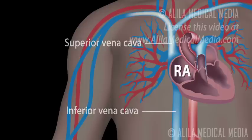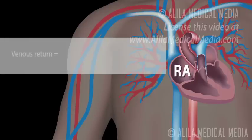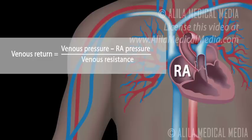The rate of venous return is determined by two factors: the pressure gradient between venous pressure and right atrial pressure, and venous resistance. A decrease in right atrial pressure leads to an increase in venous return, and vice versa.